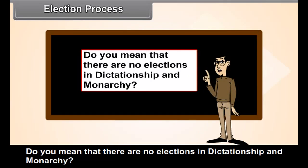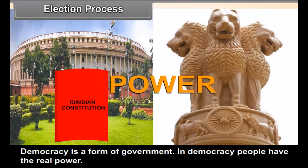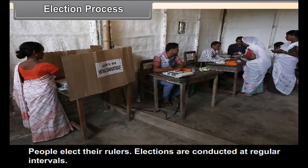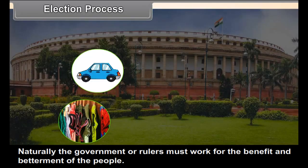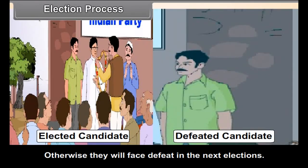Democracy is a form of government in which people have real power. People elect their rulers, and elections are conducted at regular intervals. Therefore, people have the opportunity to change the government if its performance is not satisfactory. The government must work for the benefit of the people; otherwise, they will face defeat in the next elections.